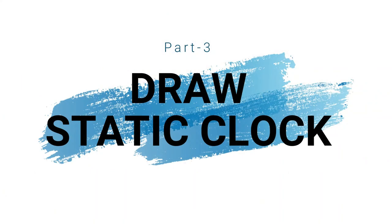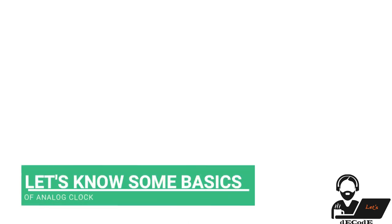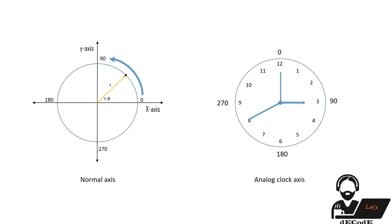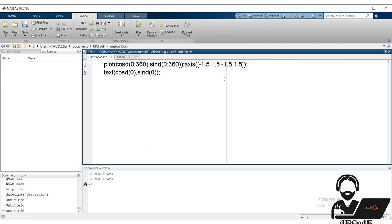We completed the basics related to our analog clock — now it's time to build it. But first we need to understand some basics about clock angles. In the general x-y plane, angles are measured anti-clockwise from the x-axis. In clocks it's different: 12 is the starting point — the equivalent of the x-axis — and all angles are measured from 12 in the clockwise direction.